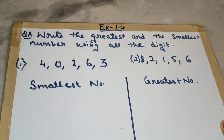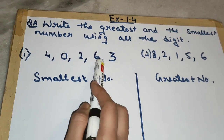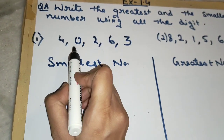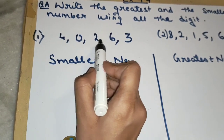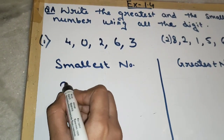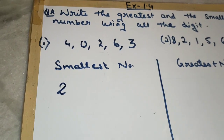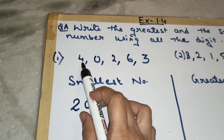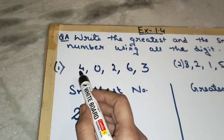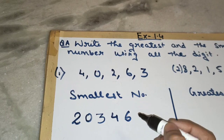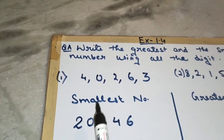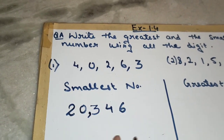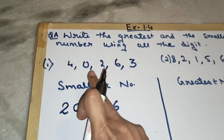In this question, the digits are 4, 0, 2, 6, and 3. When we are making the smallest number, remember we will never start with zero. The next smallest digit is 2, so we will start with 2. After 2 we write 0, then 3, then 4, then 6. We have used all five digits. Now we put the comma — this is the smallest number using these digits.